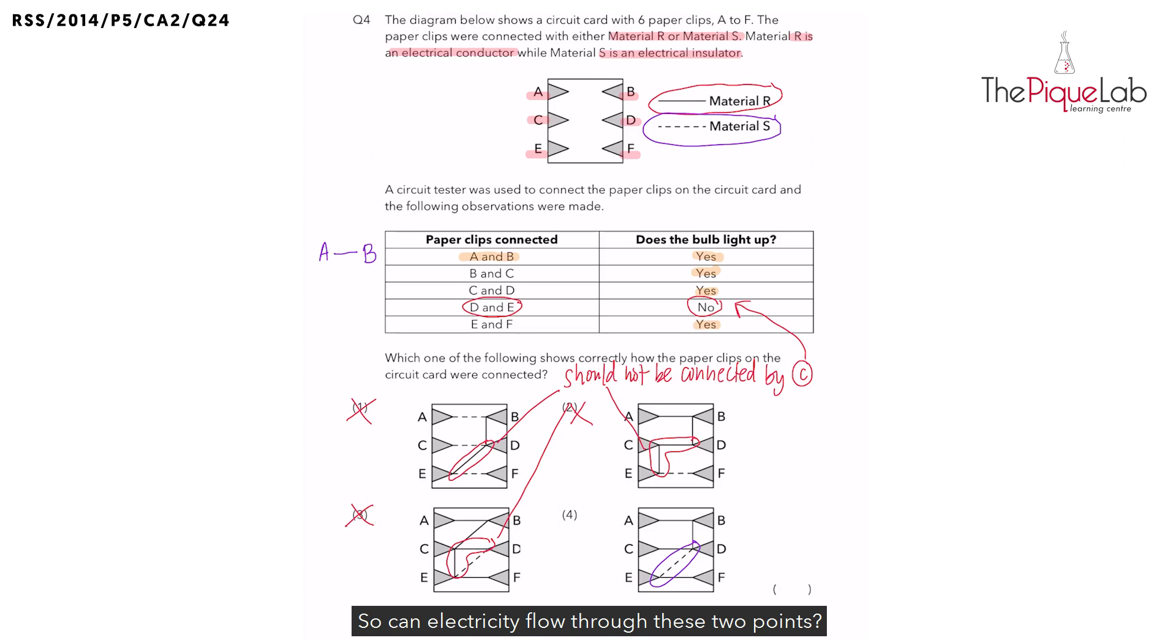So can electricity flow through these two points? No, it cannot. So that leaves us our answer as option 4.